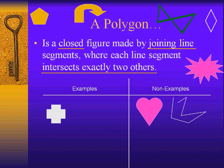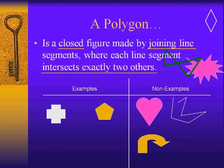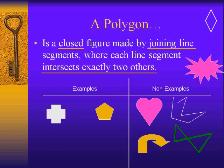The first golden shape, which we'll talk about the name of later in this presentation, would be an example. The arrow would be a non-example, again because of those curved lines. The green shape would be a non-example because those two crossing lines mean they are intersecting more than two other lines at that point.